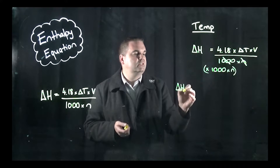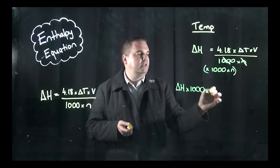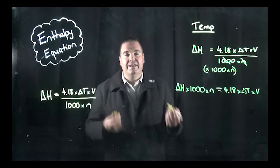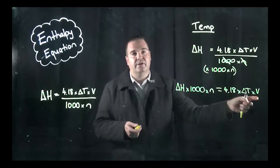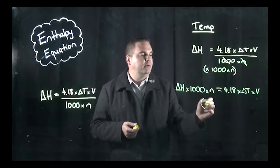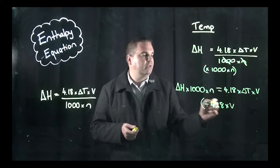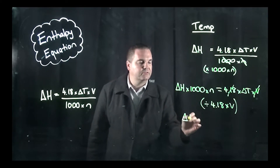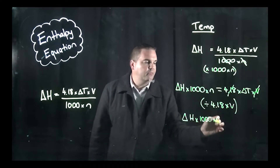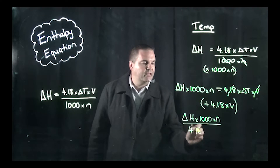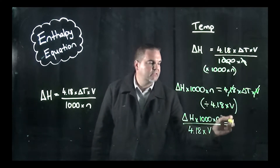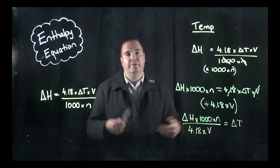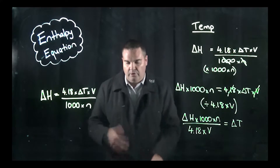We're going to end up with delta H times 1,000 times the number of moles equals 4.18 times delta T times V. Next, we want to get rid of the 4.18 and the times-by-volume to isolate temperature, so we divide both sides by 4.18 times the volume. What we end up with is delta H times 1,000 times the number of moles, divided by 4.18 times the volume — that gives us the change in temperature. If the question gives you the initial or final temperature, you'll be able to determine the other one. That's the first one.